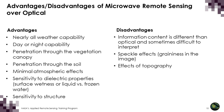The disadvantages are that the information content in radar images is different from optical and sometimes difficult to interpret. You also have to account for the effects of topography on radar images, as well as the effects of speckle, which is that graininess in the images.